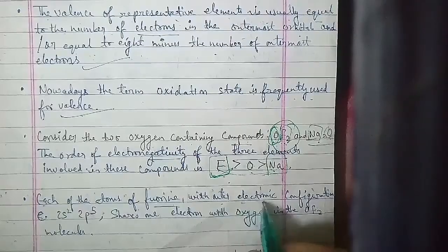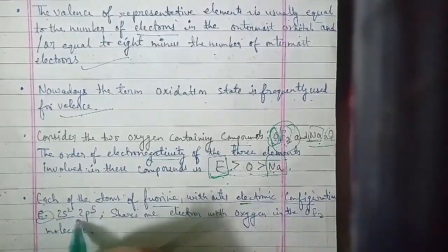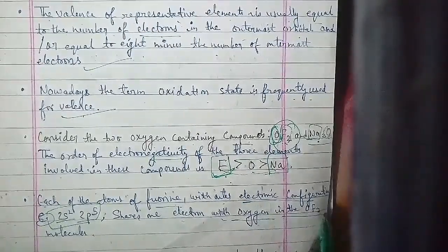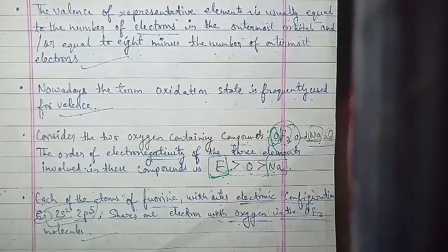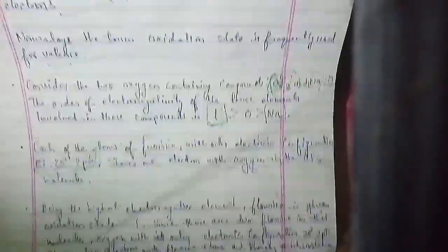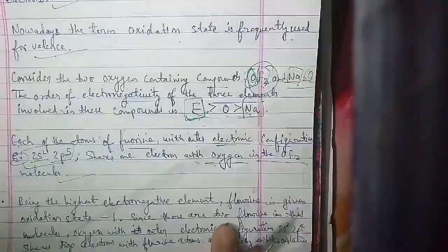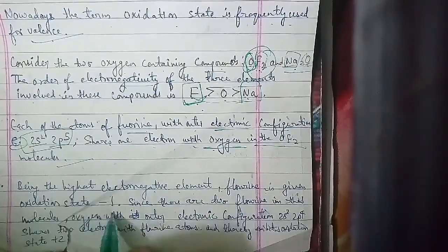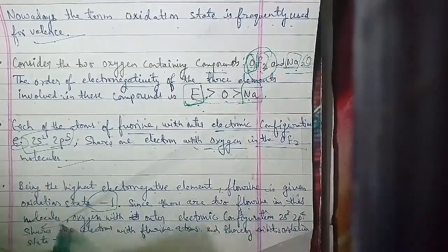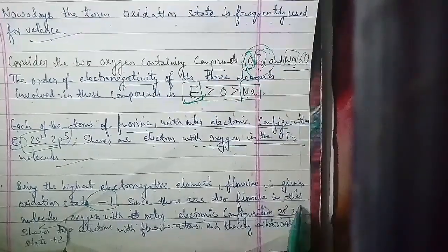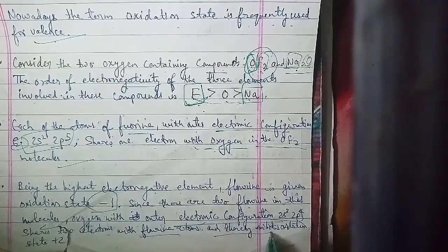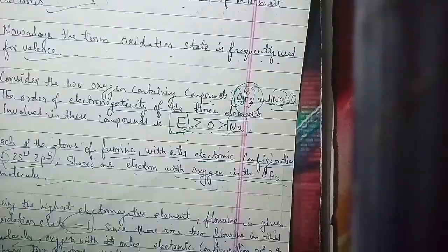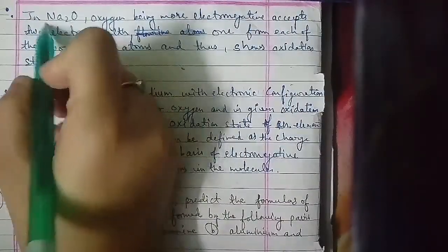Each atom of fluorine has the outer electronic configuration 2s2 2p5, which shows it shares one electron with oxygen in the OF2 molecule. Being the highest electronegative element, fluorine is assigned an oxidation state of minus one. Since there are two fluorines in this molecule, oxygen with electronic configuration 2s2 2p4 shares two electrons with fluorine atoms, and thereby shows an oxidation state of plus two.